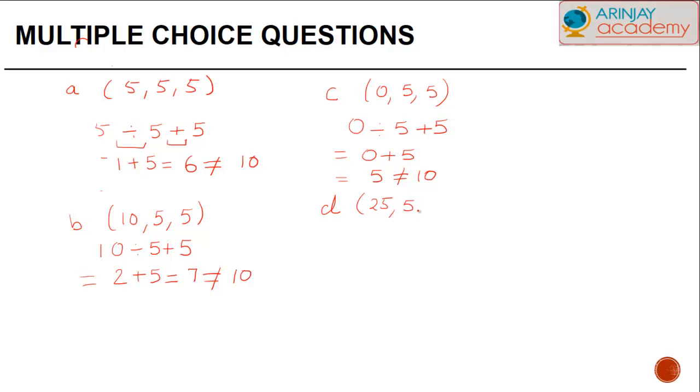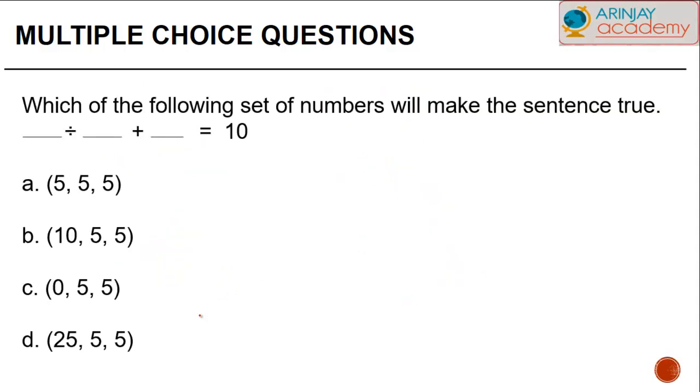The last option is D, 25, 5, 5. 25 divided by 5 plus 5. If we divide 25 by 5, we will get 5, and then we will add 5 to it. Answer is 10, which is the correct option. Therefore, the correct answer is D, 25, 5, 5.